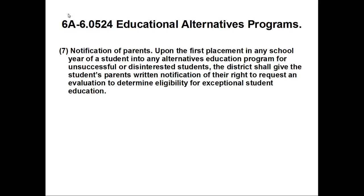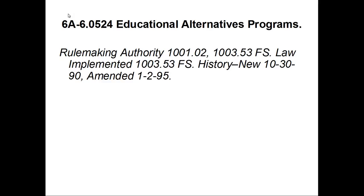For Unsuccessful Disinterested Students, the district shall give the student's parents written notification of the right to request an evaluation to determine eligibility for exceptional student education. The rulemaking authority is sections 1010.2 and 1003.53 of Florida Statutes. History: October 30, 1990, amended January 2, 1995.